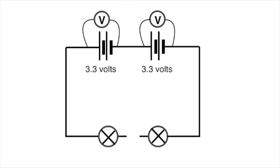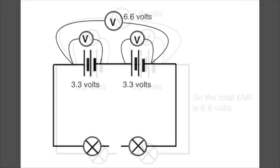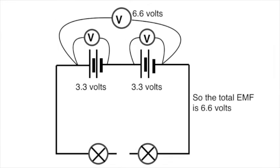In each of these measurements, the only work the cells are doing are pushing this minute current through the voltmeter to make it operate. We're measuring its maximum energy output per coulomb, hence here we're measuring the EMF. So the total EMF for these four cells is 6.6 volts.